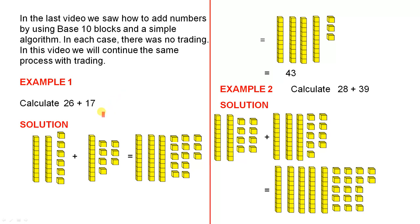Example 1: 26 plus 17. The solution, here's our 26 which is 2 tens and 6 singles. There are our 2 tens and there are our 6 singles. Here we have 17, 1 ten and 7 singles.